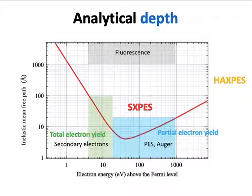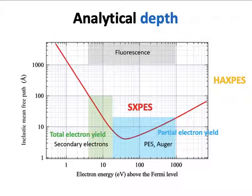XPS is very surface sensitive because the electron mean free path is quite short. The mean free path is typically less than 10 Ångströms in the soft X-ray energy range, which means we are probing the XPS spectra and atomic elements just below the surface.